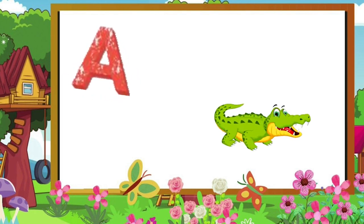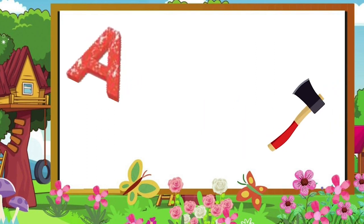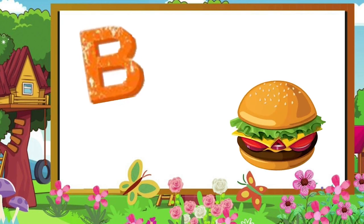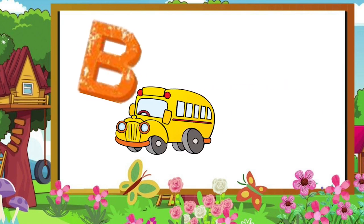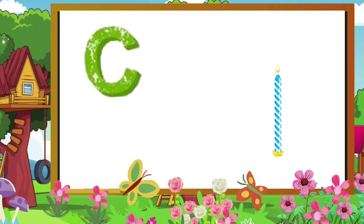A for alligator, A for ax. B for buggy, B for bus. C for crab and C for candy.